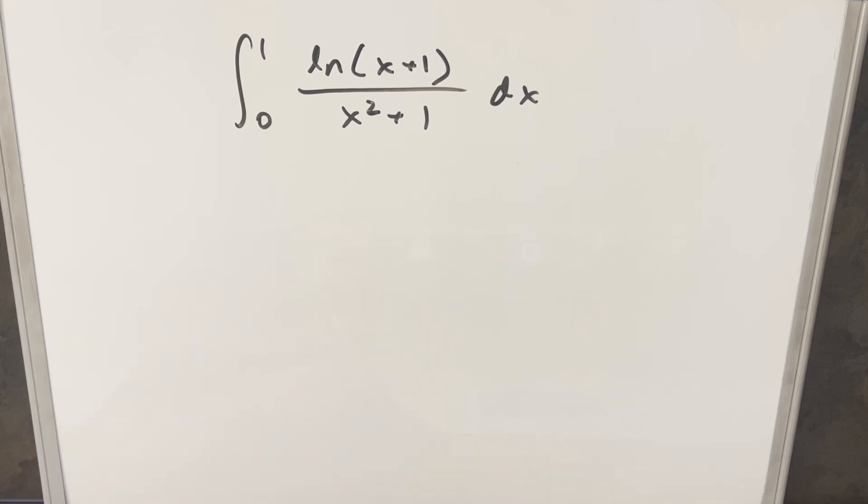I thought this was interesting because it was kind of like a cross between two problems I did recently. To get started, what I want to notice is just in the denominator, this x squared plus one, it's making me think we can do a trig substitution using tangent.